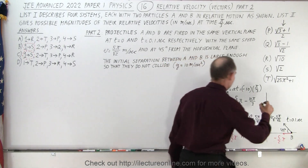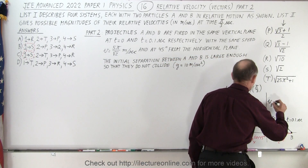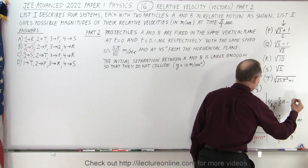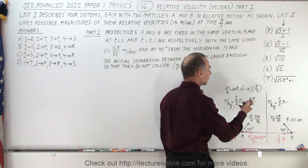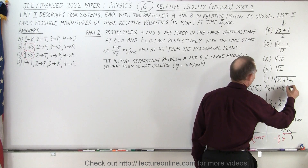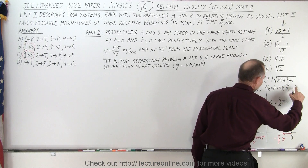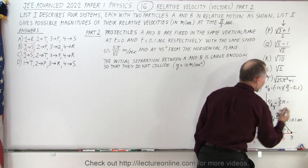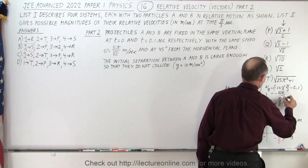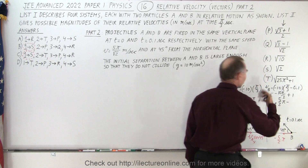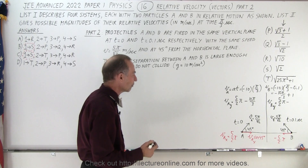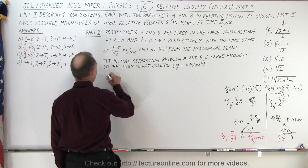For B, the velocity in the y direction starts with the same initial upward component of 5π over 2, but the time elapsed for B is different. Since B is fired 0.1 seconds later, the acceleration term is minus 10 times (π over 3 minus 0.1). So VB in the y direction equals 5π over 2 minus 10 times (π over 3 minus 0.1), giving an extra plus 1 contribution — that is the velocity of B after π over 3 seconds.